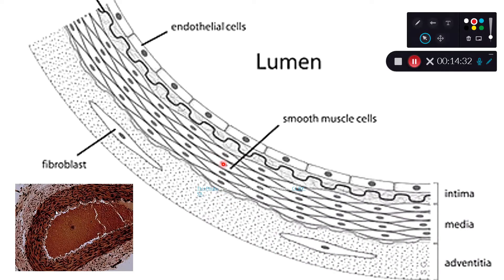When the smooth muscle cells contract, the diameter of this vessel gets smaller.